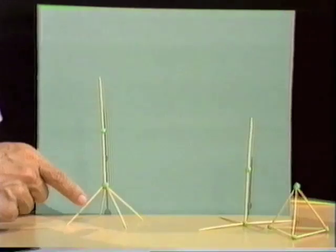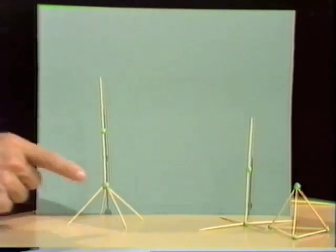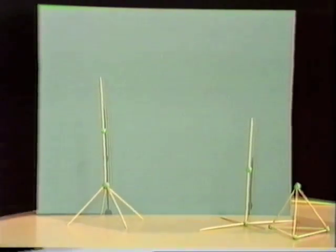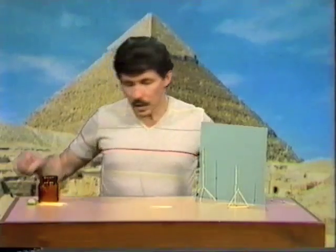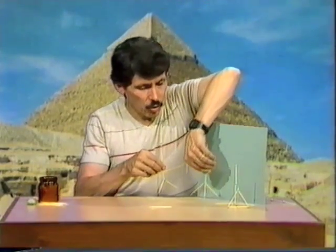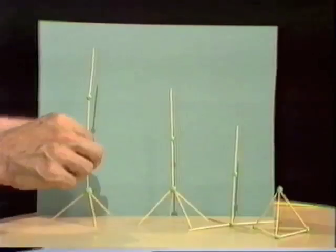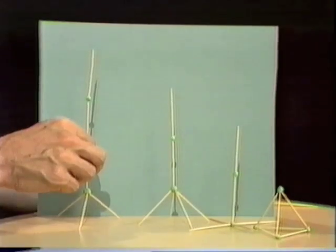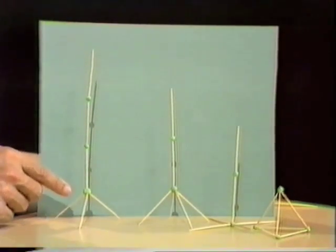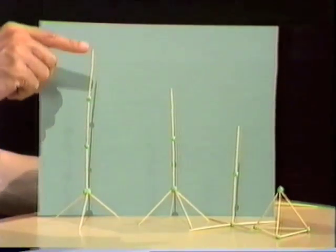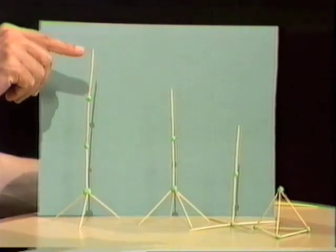But why waste four legs for the base? You know as well as I do that a camera tripod has just three legs and that's quite stable. So let's make another tower. This time with three toothpicks for the base, leaving us three toothpicks to give us the height of the tower. And you can see now that we're almost up to the top of the wall. We're still a little bit short though.